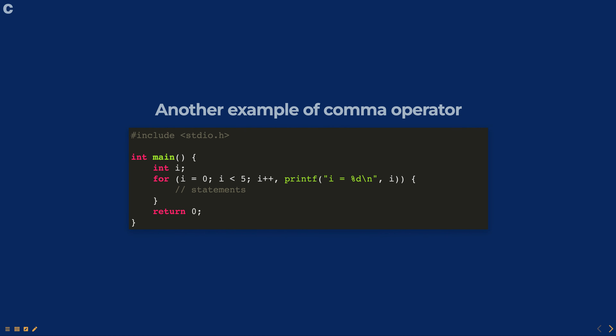Another way to use the comma operator is in a for loop. In this example, the comma operator separates two expressions in the for loop's control statement. The first expression is i++, which increments the value of i by one, and then the second expression printf is used to print the current value of i. This way we can include multiple statements in the control part of the for loop.